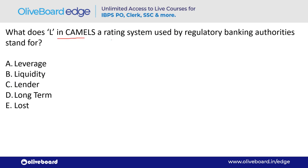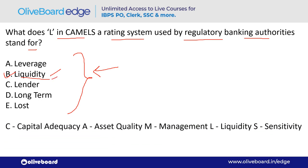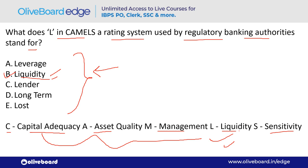What does 'L' in CAMELS stand for? CAMELS is a rating system used by regulatory banking authorities. L stands for Liquidity — option B. The full form: C is Capital Adequacy, A is Asset Quality, M is Management, E is Earnings, L is Liquidity, and S is Sensitivity. Remember this full form — it is very important.